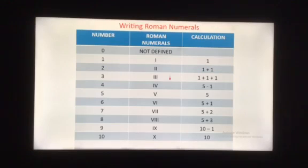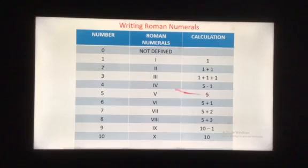Similarly, for writing 3, we split 3 in 1 plus 1 plus 1 which is 3 times I. As we cannot write I 4 times, we subtract 1 from 5 and write it as IV. This is how we split all the numbers.